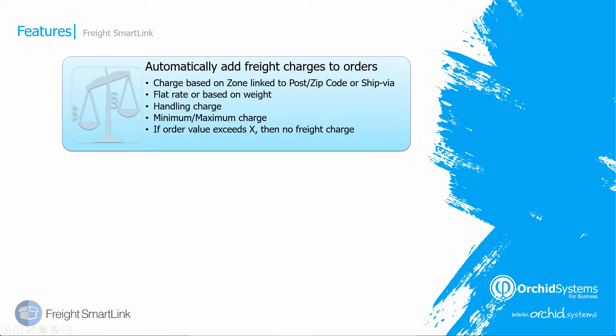We have seen how to configure FreightSmartLink to automatically add freight charges to orders. The charges are based on a zone linked to the postcode or the ship via on the sales order or shipment. A flat rate can be included or it can be based on the weight of the order. You can have a handling charge and a minimum and maximum charge, and if the order value exceeds a certain amount, you can have zero freight charge.